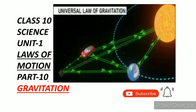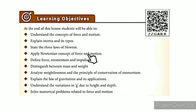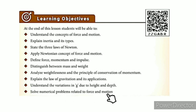Greetings from SS Class 10 Science Unit 1, Laws of Motion Part 10: Gravitation. The learning objectives are: understand the concepts of force and motion, explain inertia and its types, state Newton's three laws, apply Newtonian concepts of force and motion, define force, momentum and impulse, distinguish between mass and weight, analyze weightlessness and conservation of momentum, explain the law of gravitation and its applications, understand variation in g due to height and depth, and solve numerical problems related to force and motion.